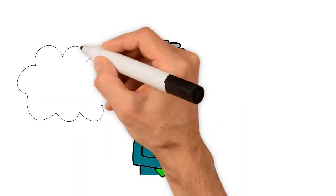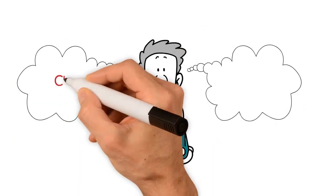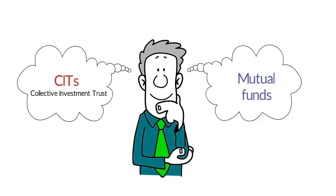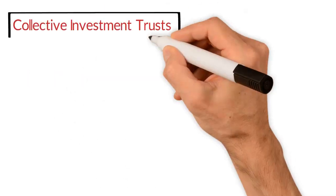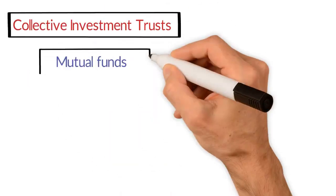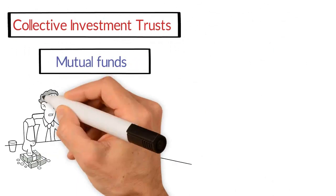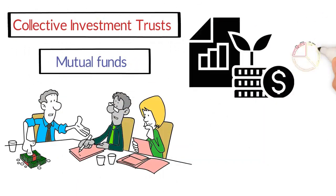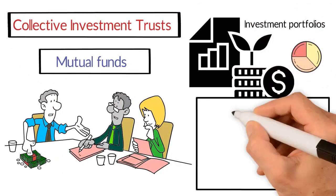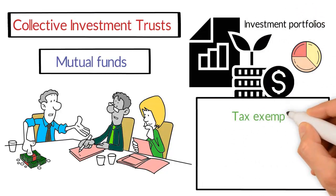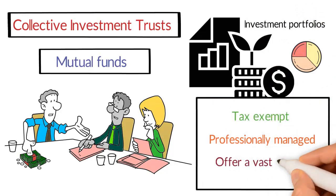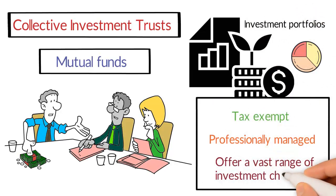In order to understand the differences between CITs and mutual funds, let's first look at their similarities. Collective Investment Trusts and Mutual Funds both pool money with other investors to create investment portfolios that are tax-exempt, professionally managed, and offer a vast range of investment choices.